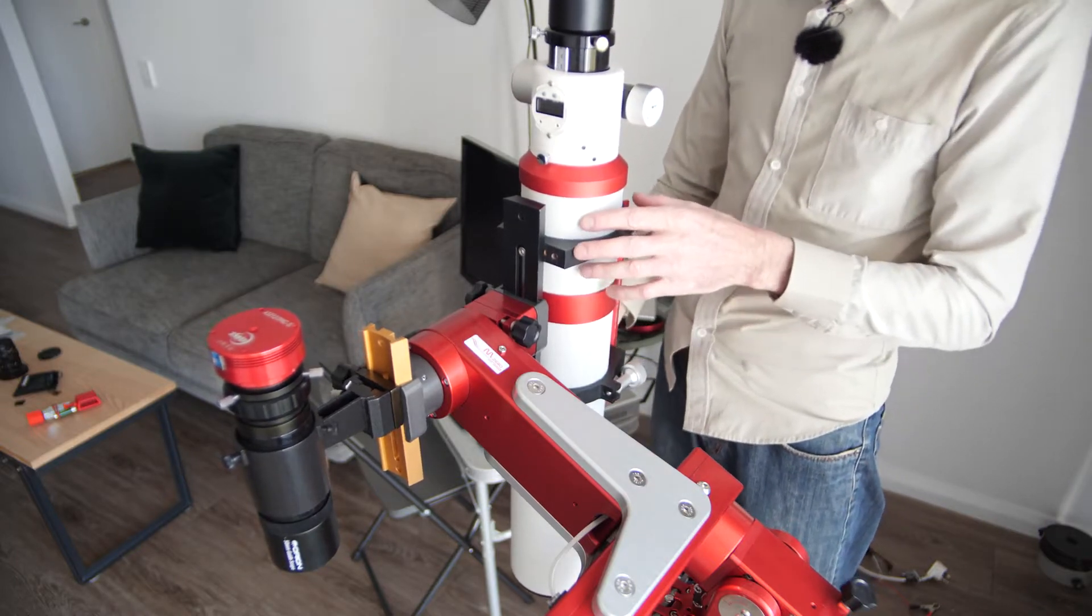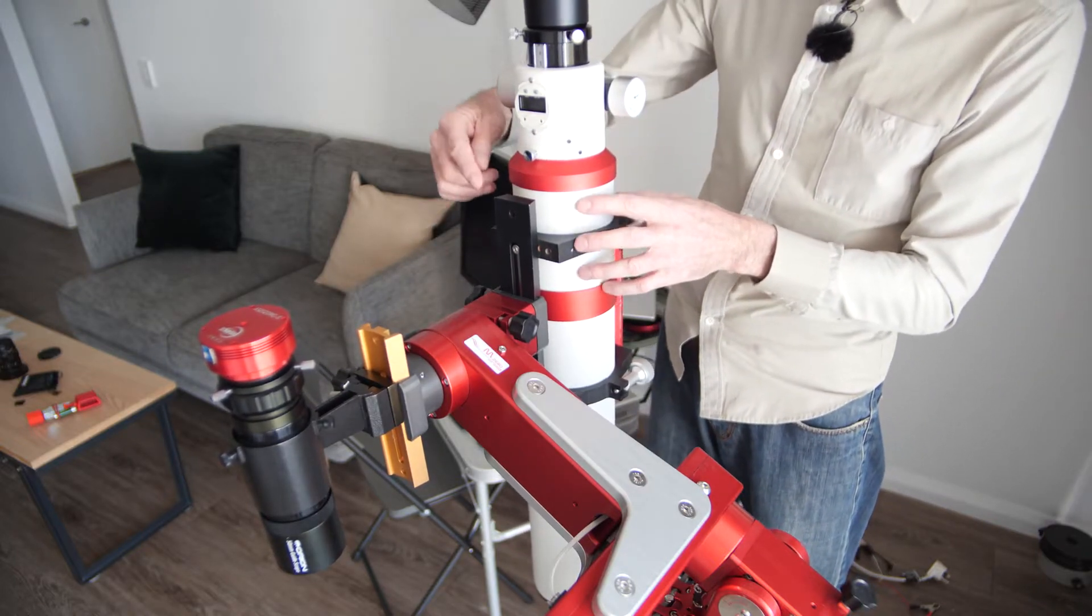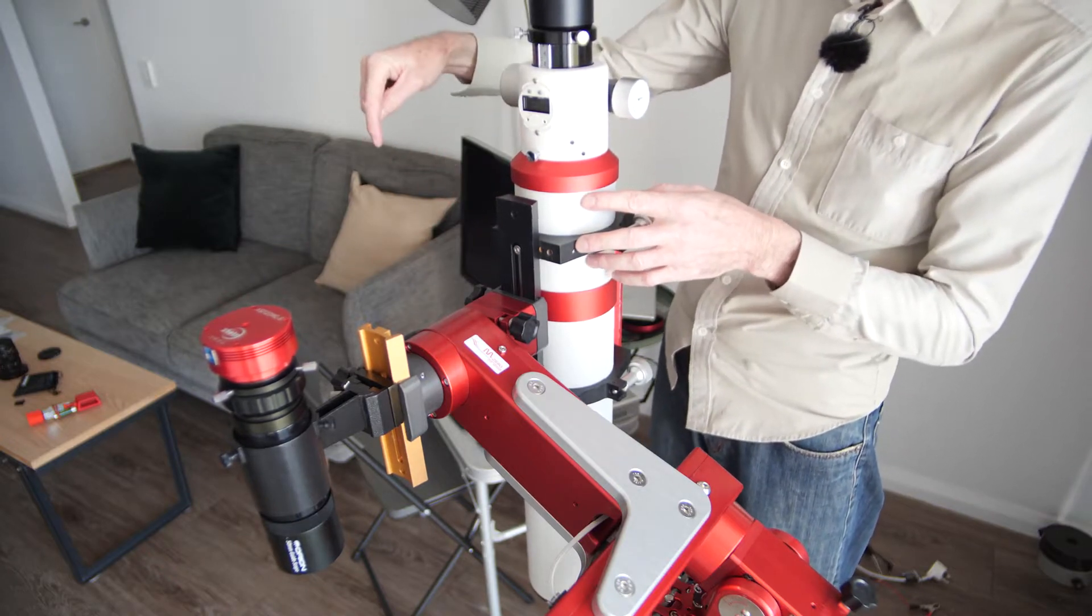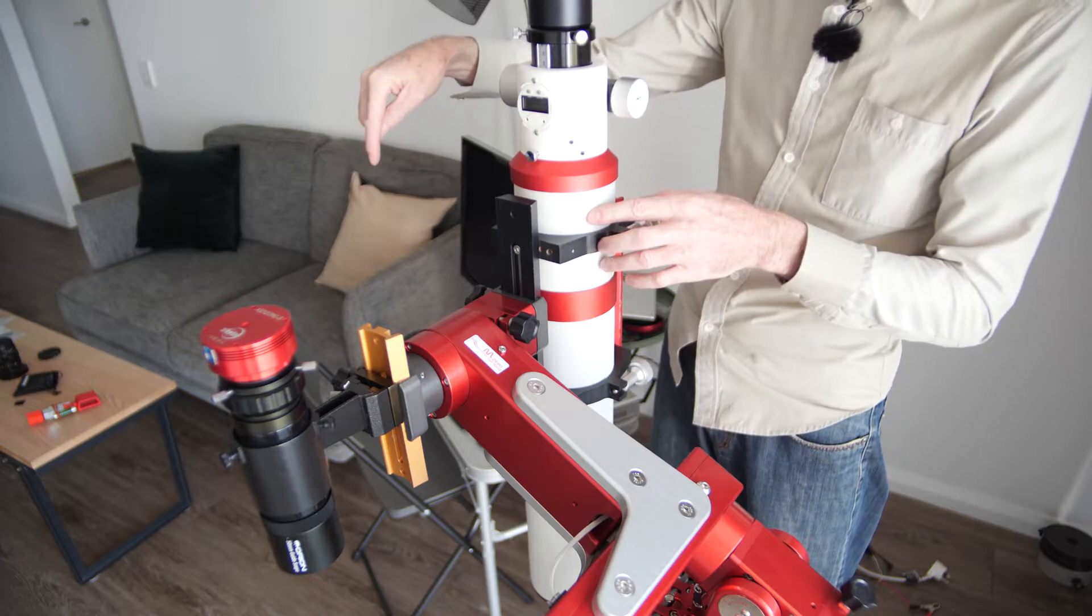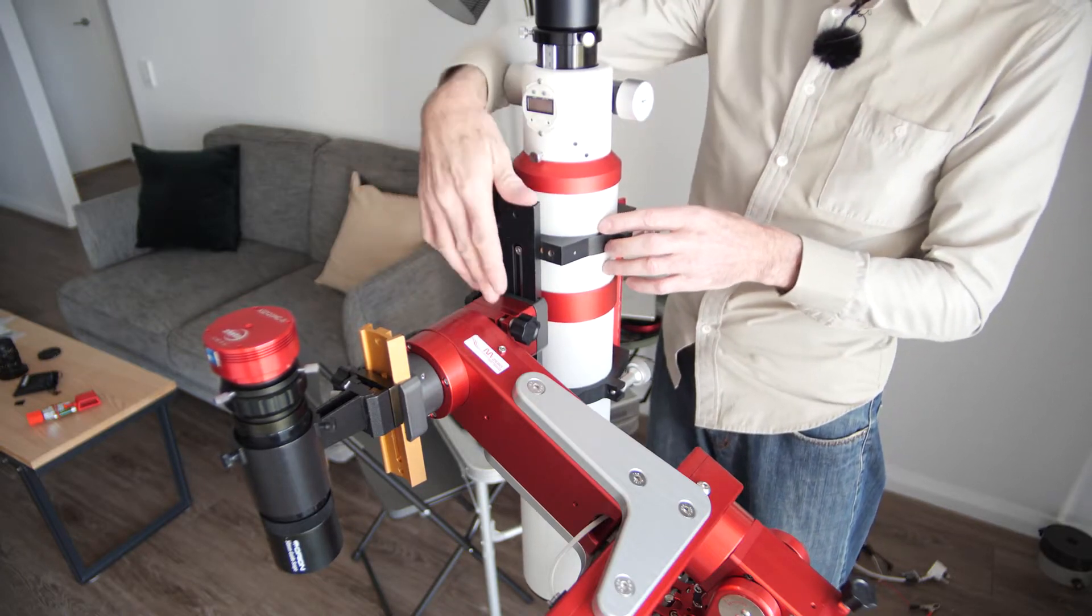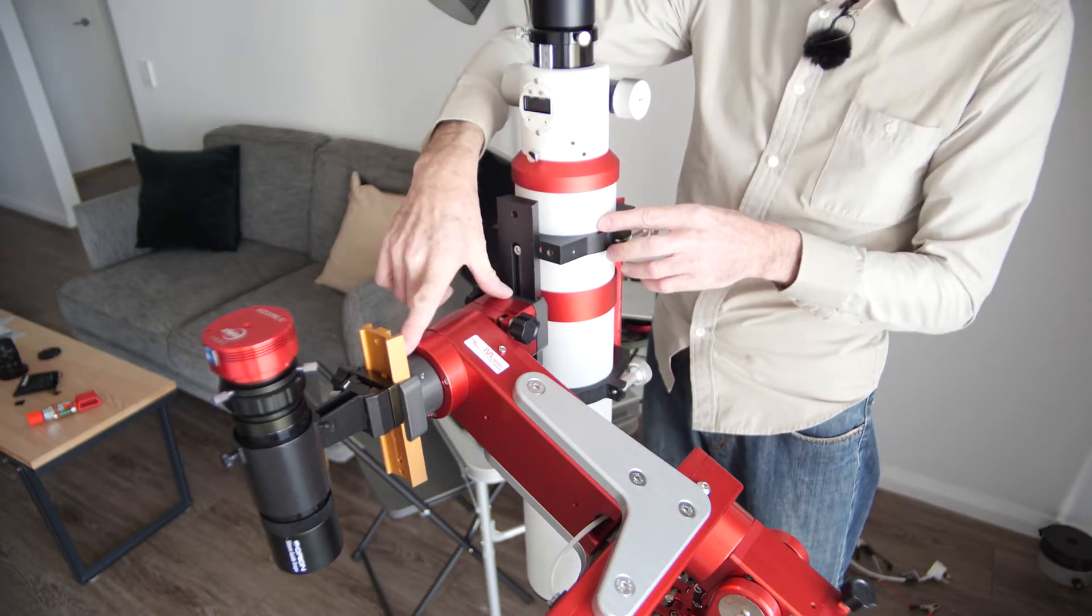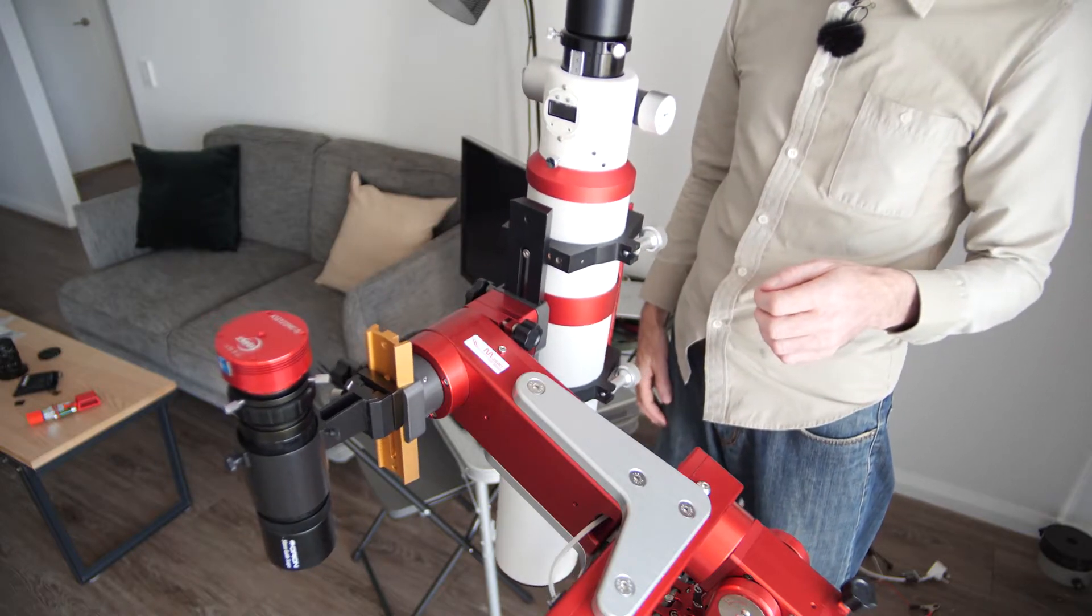So what we need to do is have an offset weight, a moment which is a force by a distance pointing down this way, acting around the deck axis to basically counteract this.